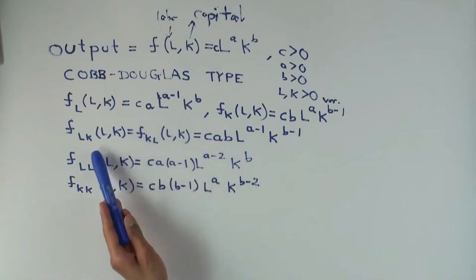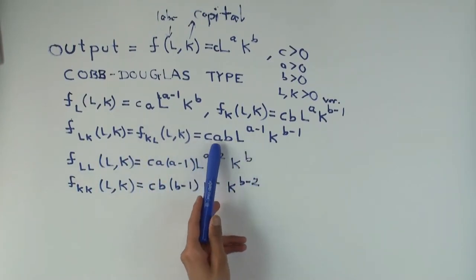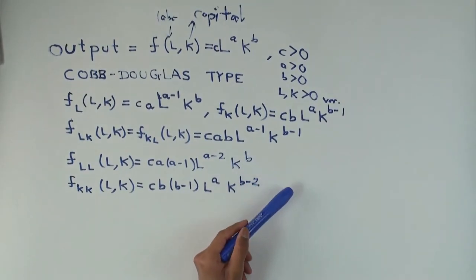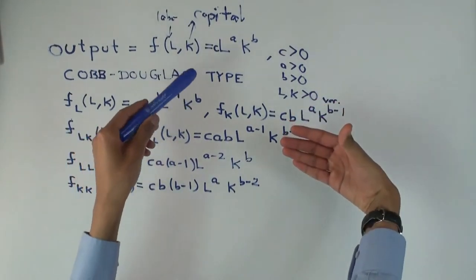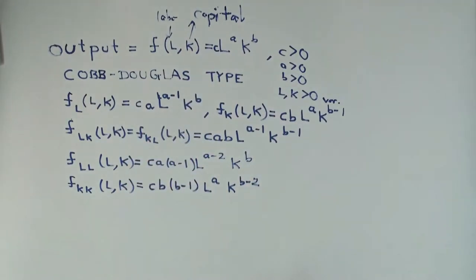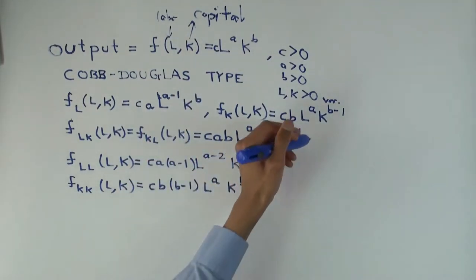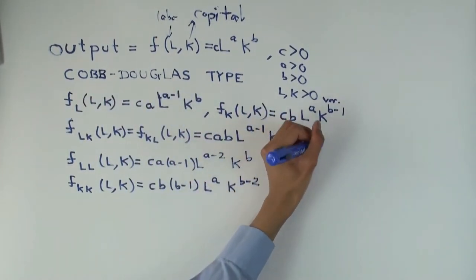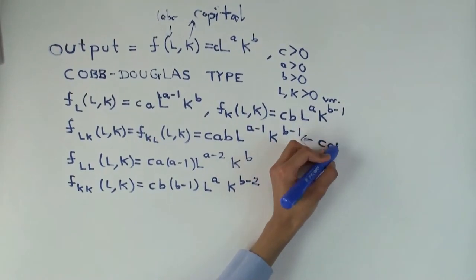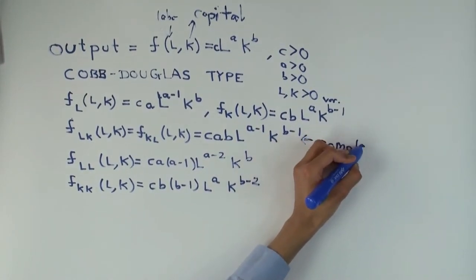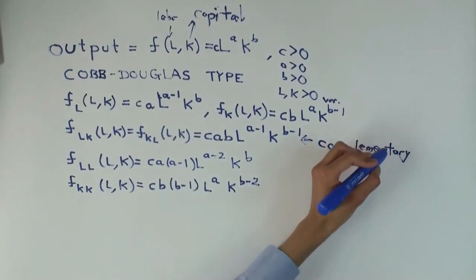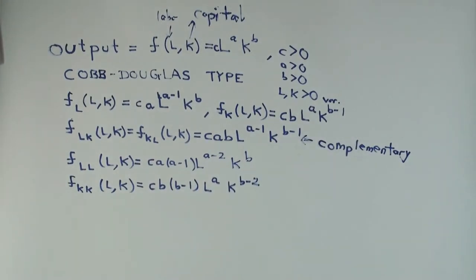So what this is saying is that the marginal product of labor is positive for all values of labor and capital, and the marginal product of capital is positive for all values of labor and capital. Now what can you say about whether they substitute or complement each other? What can you say about this expression? Well, c, a, and b are all positive. They are all positive. In fact, because it's multiplicatively separable, the signs don't really get affected.